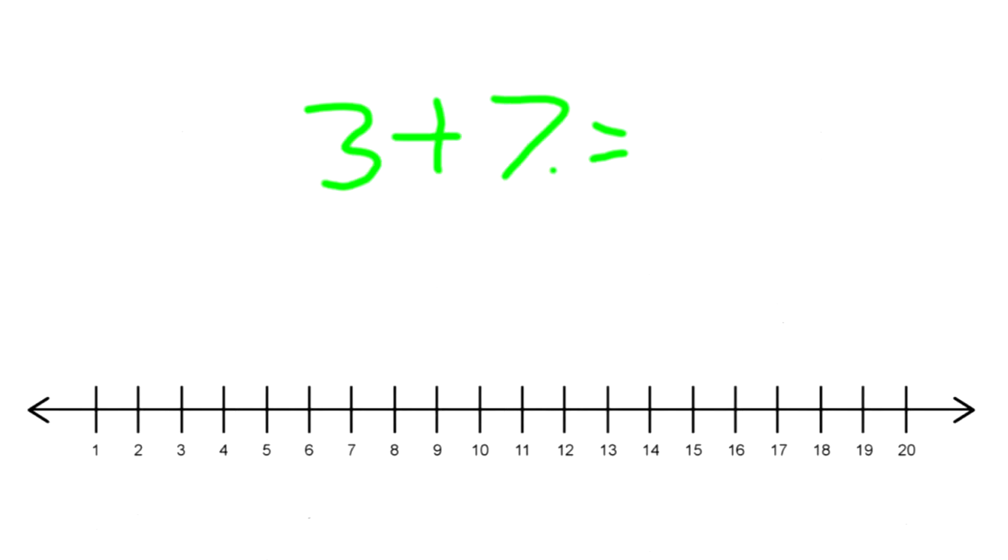So let's find the number 7 on our number line and there it is right here. And so we're going to hop like a frog three times: one, two, three. And we ended up on the number 10. So 3 plus 7 equals 10.